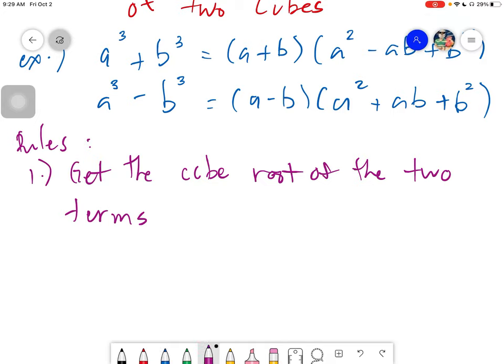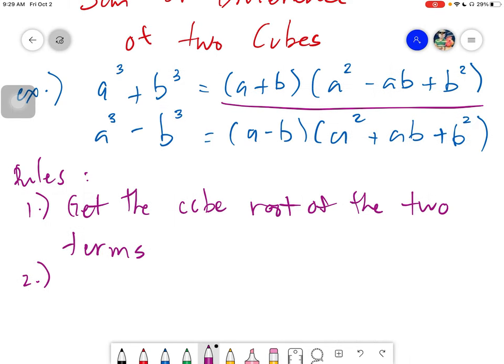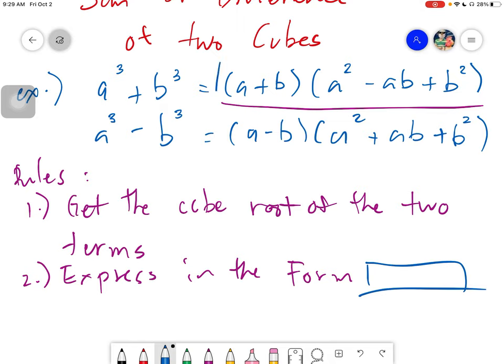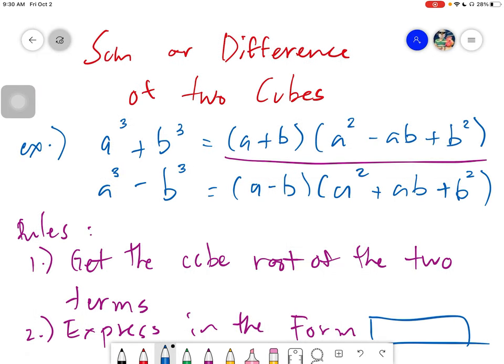After you get the cube root, you have to express your two cube roots in this form. Express them in the form that we boxed in blue. This is the important part when it comes to the factored form of the sum or difference of two cubes. Basically, what you need to do here is firstly, you need to get this part, the binomial part. The binomial part is just simply combining the two.